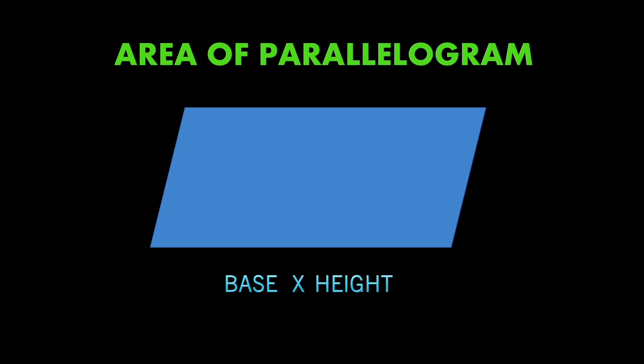When it's a parallelogram, there is no length and breadth — it becomes base and height. The area of a parallelogram is base into height. The base is any one side of the parallelogram, and the height is the perpendicular drawn from the opposite vertex to that base. We can get two pairs of base and height in any parallelogram, and we multiply any corresponding pair to get the area.